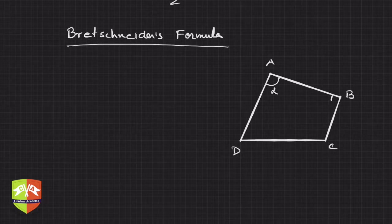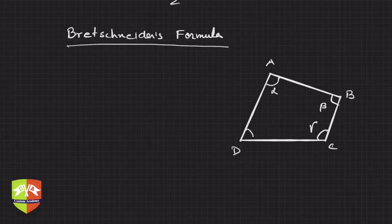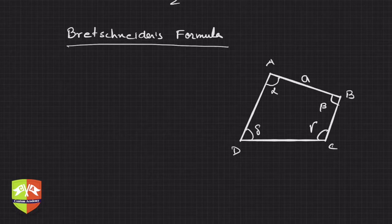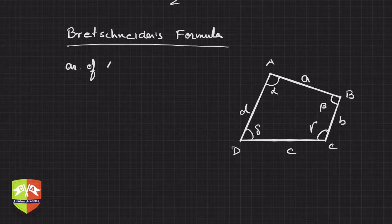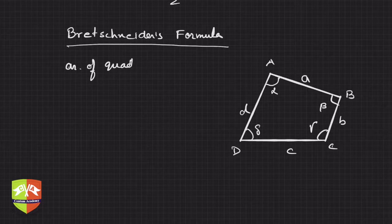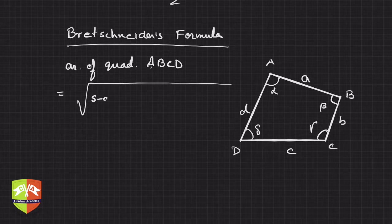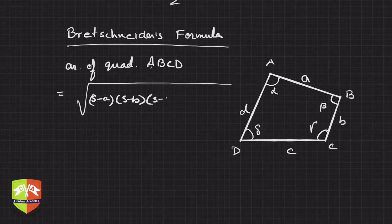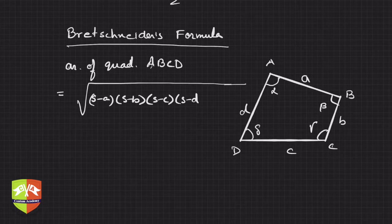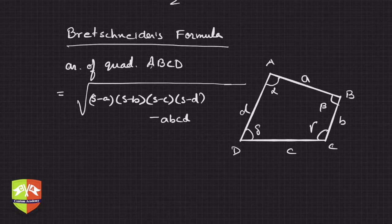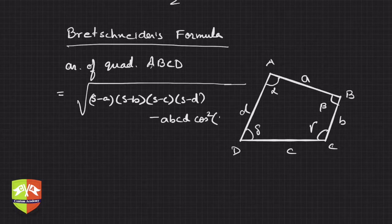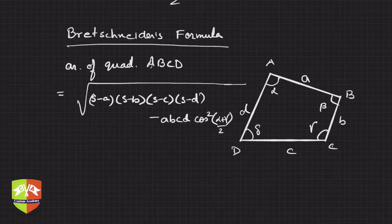Let's say this quadrilateral is ABCD, and you have angles: let this angle be alpha, this be beta, this angle be gamma, and this be delta. And again sides are a, b, c, and d. Then area of quadrilateral ABCD is given by the formula.